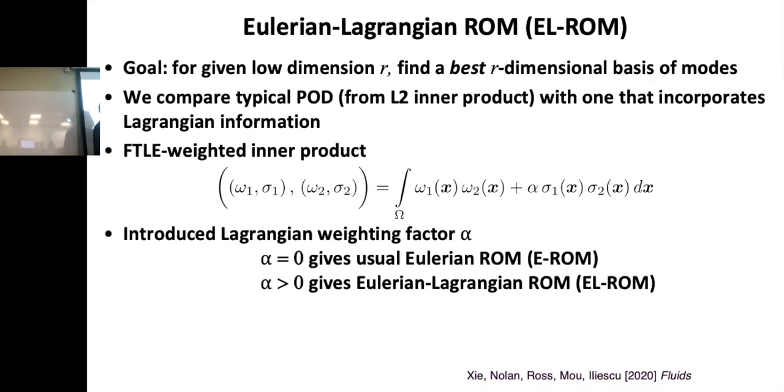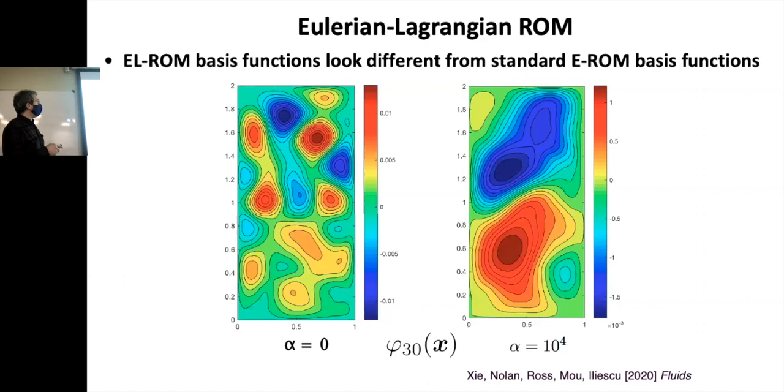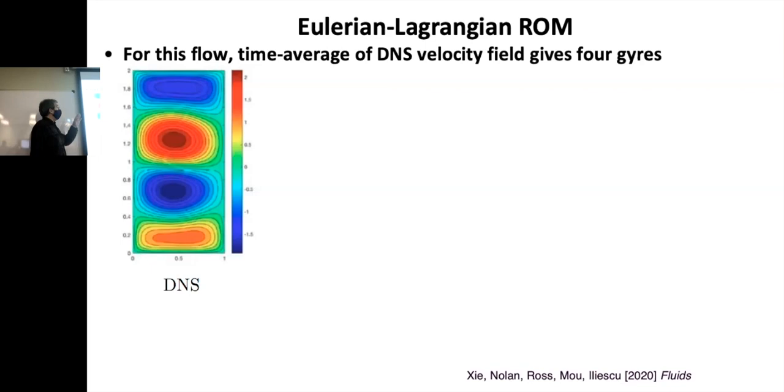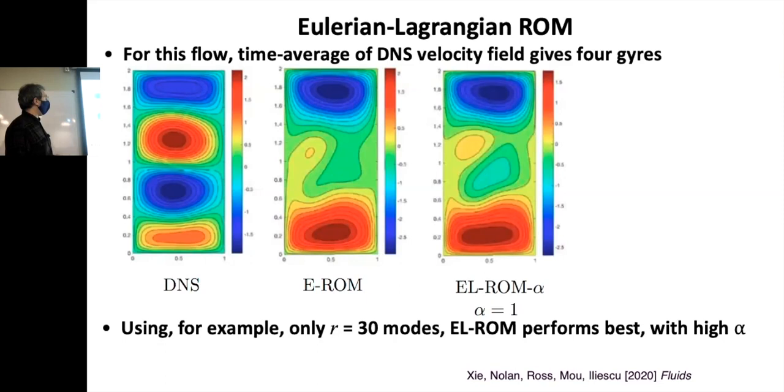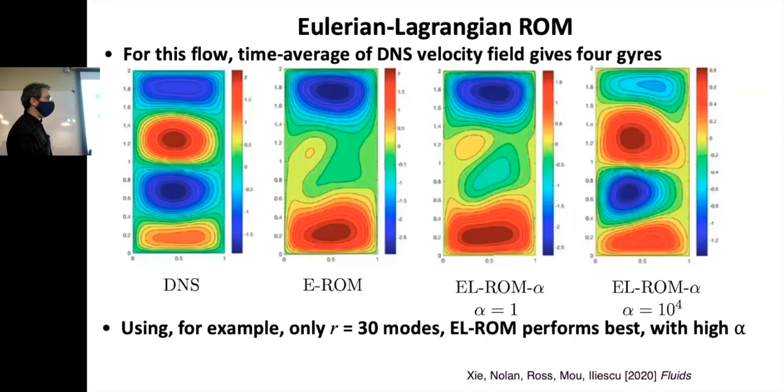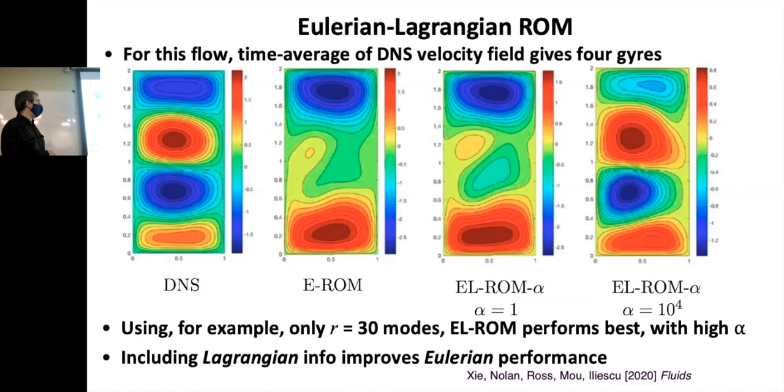The basis functions look different. This is the 30th basis function. This is the, just using Eulerian criteria. And this is when we have, we've tuned up alpha really high here. But you can see it, you get a different set of basis functions. Like I said, for this flow, the long-term time average of direct numerical simulation is four gyres. It's kind of weird given that the forcing should only produce two, but you get four. And if we use only 30 modes, this is the time average for Eulerian ROM. If we use the Eulerian Lagrangian ROM with alpha equal to one, it's not too different. If we really crank up the effect of the Lagrangian information, we're getting something that's close to the DNS simulation. So this tells us this is a fruitful direction to go for future work. I think it's interesting that including Lagrangian information improves Eulerian performance. Trying to get the flow field right is an Eulerian thing. So why is Lagrangian information useful?